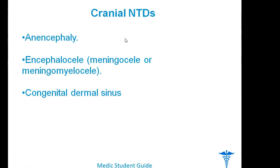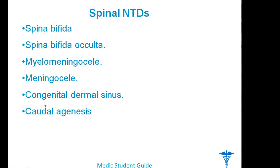We also divide neural tube defects according to cranial and spinal locations. Cranial neural tube defects can include anencephaly and corpus callosum agenesis.